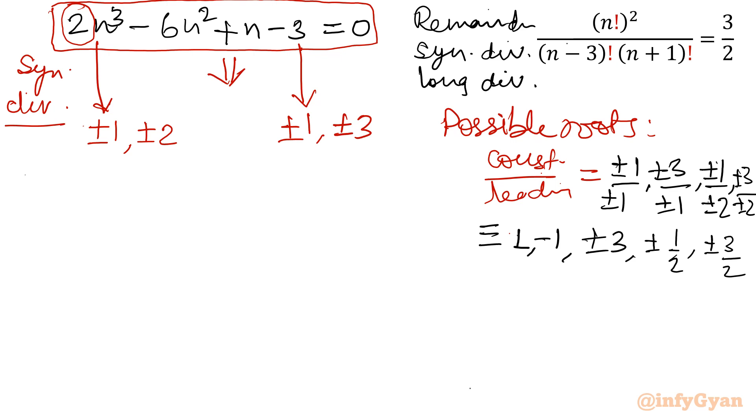So as per the given order, let me put n equal to 1. So 2 minus 6 plus 1 minus 3, it is not coming out 0. Minus 1 if you will check, let me put minus 1. 2 into minus 1 whole cube, so minus 2, minus 6, minus 1, minus 3. All numbers are negative, cannot be 0.